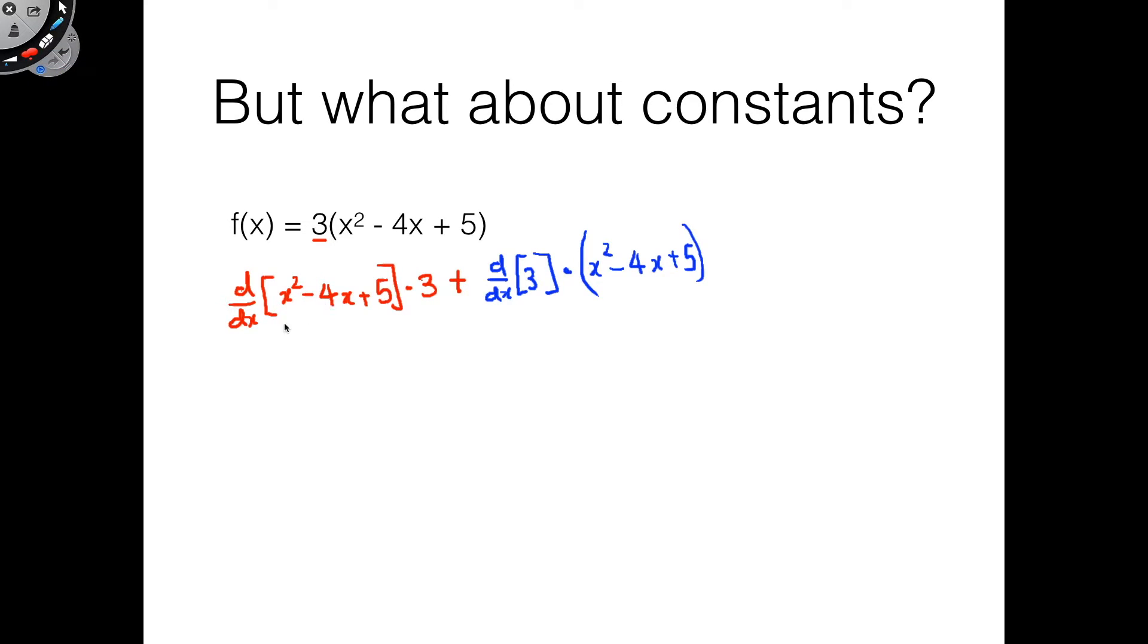The derivative of this is simply going to equal (2x - 4) all times 3. But what is more significant is what is the derivative of all this going to equal? If you really think about it, the derivative of 3 is just going to be 0 because 3 is a constant. Its rate of change is 0, so therefore this is all just going to equal out to 0.